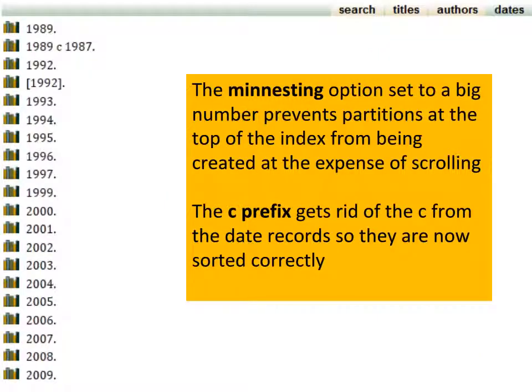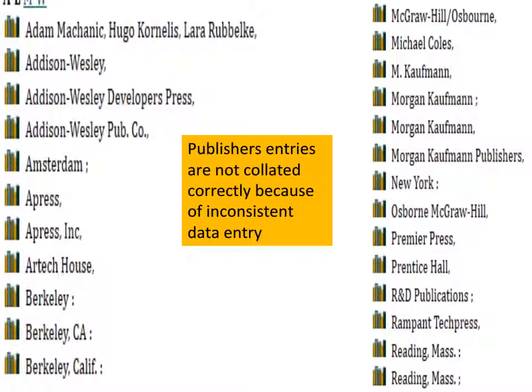Here's the result of our data fixing. The index is almost perfect except for the bracket entry. The 1992 records are now collated except for the record under bracket-1992-bracket. A bit better, but the only real solution is to edit the metadata. As for our publisher's index — as we predicted from the data, not very well. We've got three entries for Addison-Wesley, three Berkeleys, and four Morgan Kaufmans — nothing is collated. The index is a mess because the data was a mess.